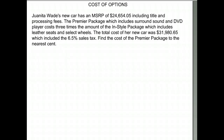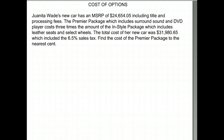Now let's talk about costs — more costs of options. Juanita Wade's new car has an MSRP — that's the retail price — of twenty four thousand six hundred fifty four dollars and five cents. That includes the title and the processing fee.